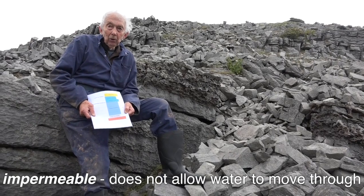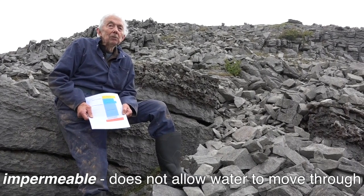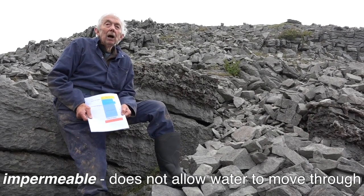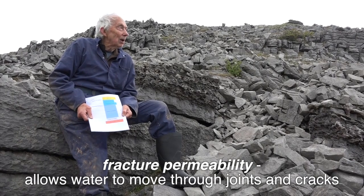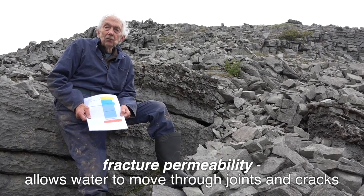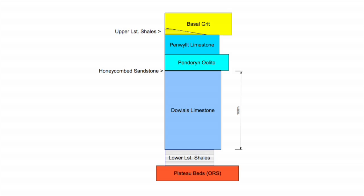Old Red Sandstone is impermeable. The Millstone Grit — the basal grit of the Millstone Grit series — has fracture permeability. This shows the sequence of the Carboniferous limestone with the plateau beds of the Old Red Sandstone underneath and the basal grit of the Millstone Grit series above.